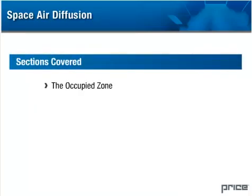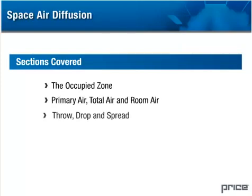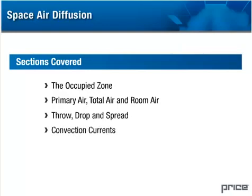One: the occupied zone. Two: primary air, total air, and room air. Three: throw, drop, and spread. Four: convection currents. And five: returns.